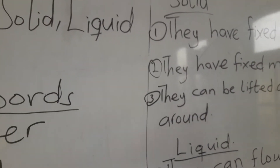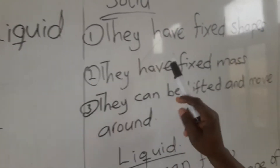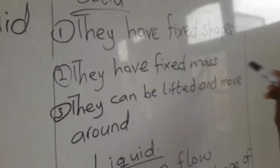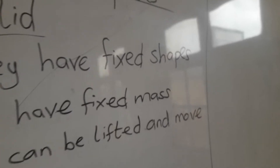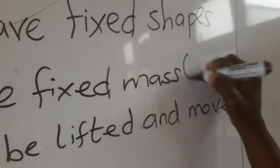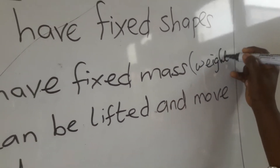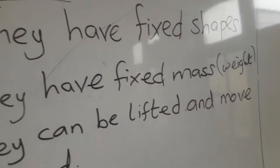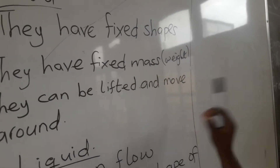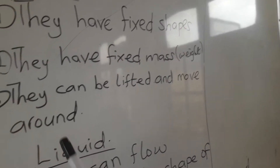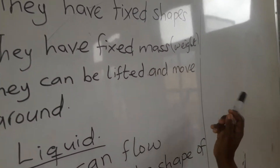They have fixed shapes. They have fixed mass — mass means weight. And they can be lifted and moved around. So these are the physical properties of solid.